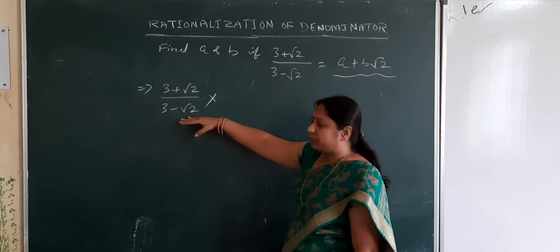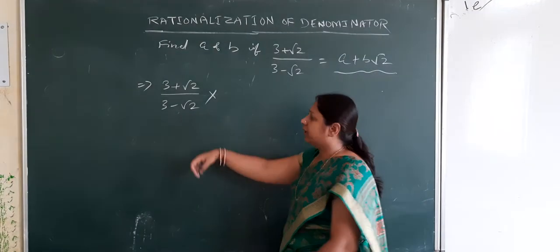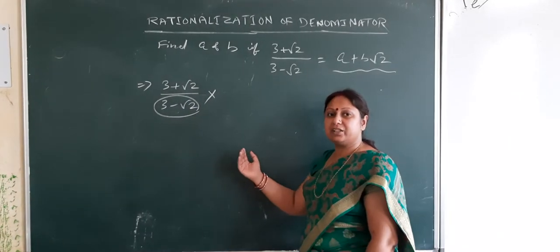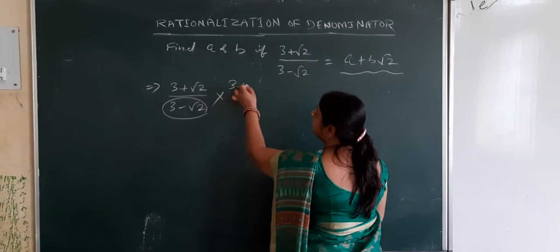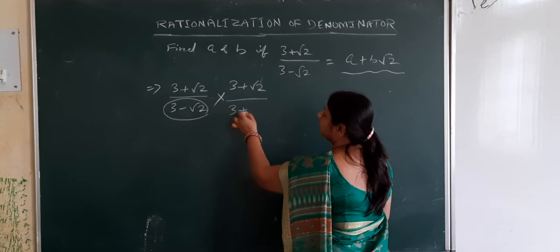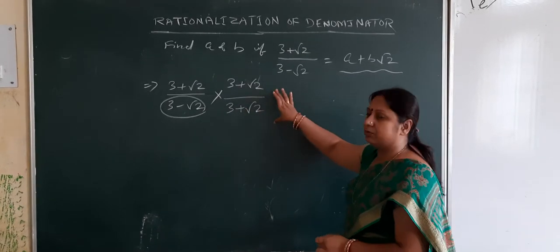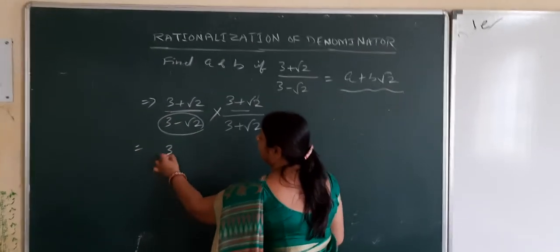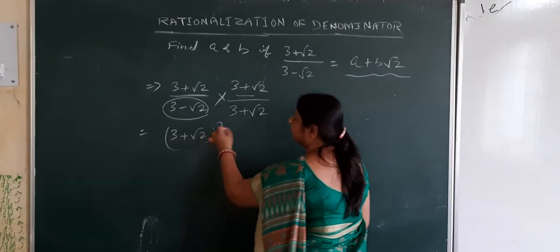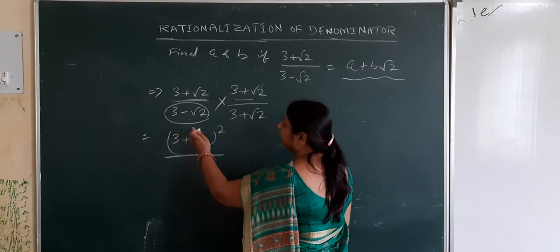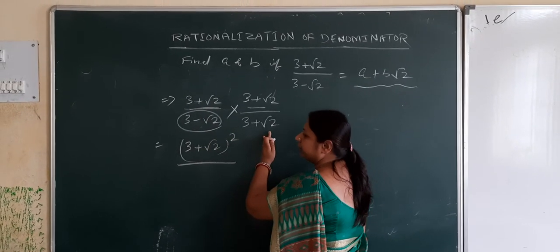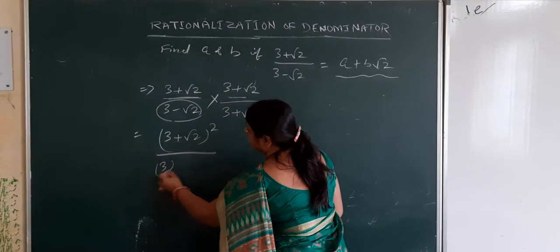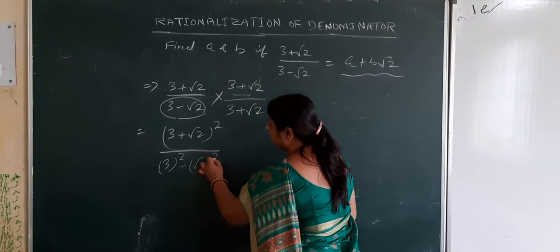The denominator is (3 minus root 2), so its rationalizing factor will be (3 plus root 2). We multiply and divide by (3 plus root 2). The numerator becomes (3 plus root 2) whole squared, and the denominator becomes (3 minus root 2)(3 plus root 2), which by the identity a squared minus b squared gives 3 squared minus (root 2) squared.